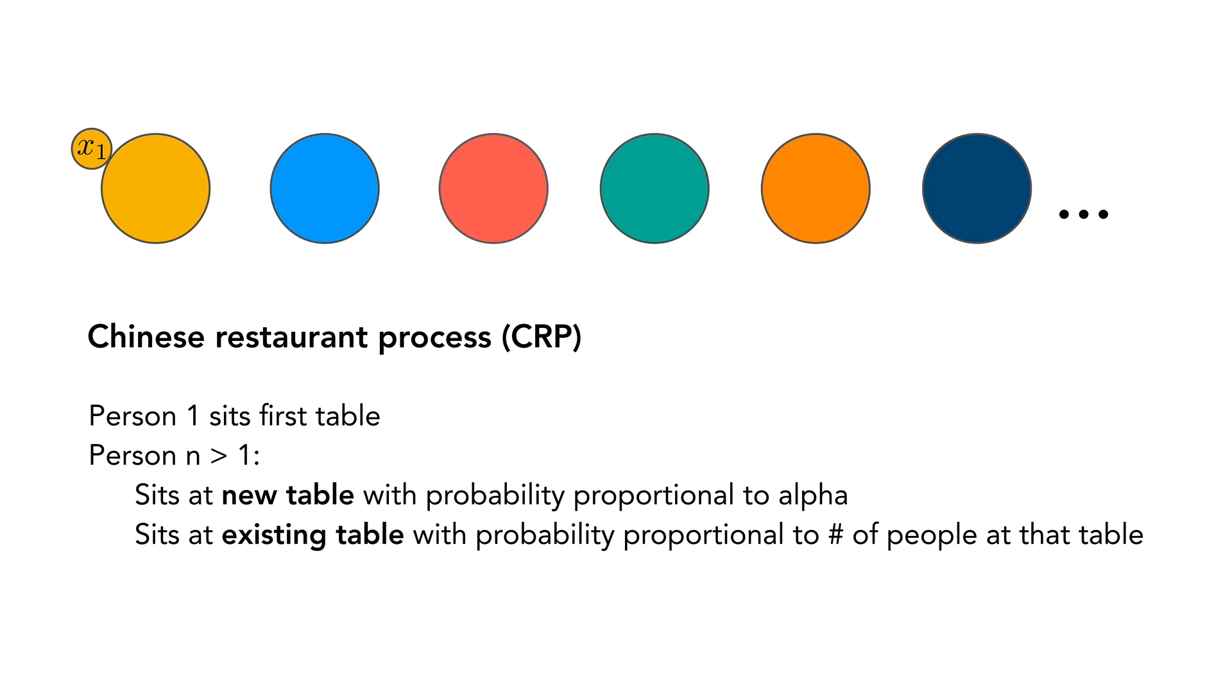And following that, each person sits at a new table with probability proportional to the concentration parameter alpha, and at an existing table with probability proportional to the number of people already at that table.